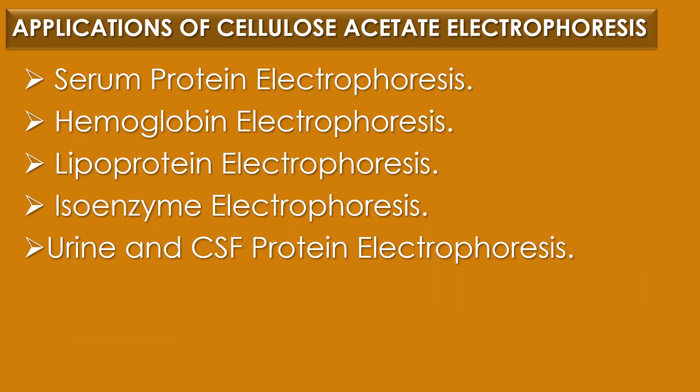There are five applications of cellulose acetate electrophoresis. The first application is serum protein electrophoresis, which is the most common application. It separates serum proteins into five distinct fractions: albumin, alpha-1, alpha-2, beta, and gamma globulins. This is very useful in the diagnosis of liver diseases, kidney diseases, and multiple myeloma.